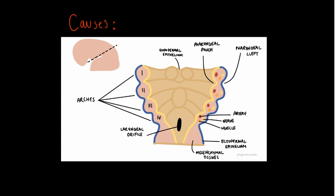The branchial apparatus is a derivative of the foregut, which is developed during the second fetal week — you can see the foregut here. You probably remember these diagrams from first or second year of medical school. The foregut consists of five paired pharyngeal arches: pharyngeal arch one, two, three, and so on.